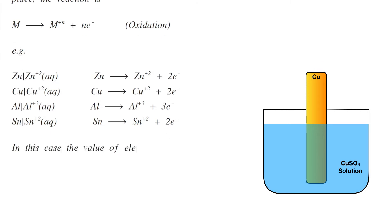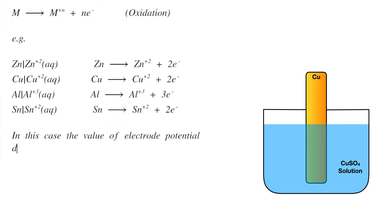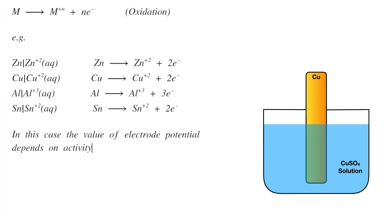In this case, the value of electrode potential depends on the activity of the metal ion. So if the concentration of metal ions changes, the electrode potential will also change.